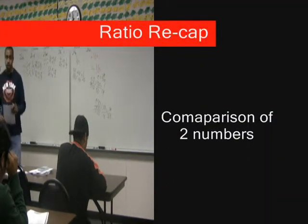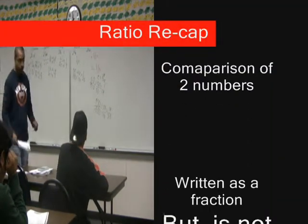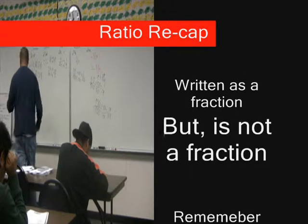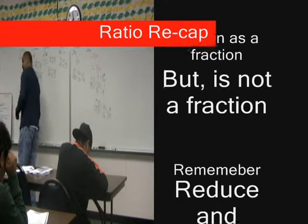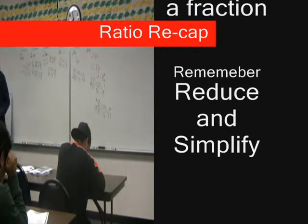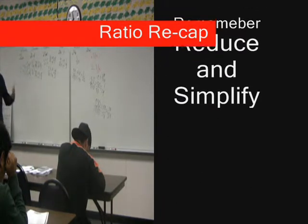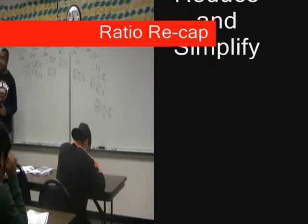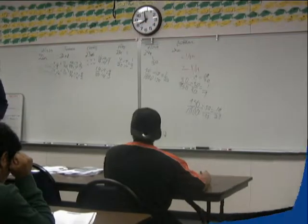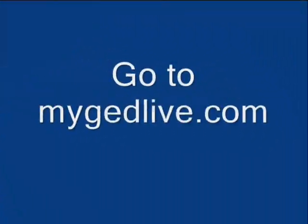A ratio is a comparison of two numbers. A ratio can be written as a fraction, but it is not a fraction. We have to make sure to reduce and simplify them for the purposes of the GED — that's how they're going to want the answers.